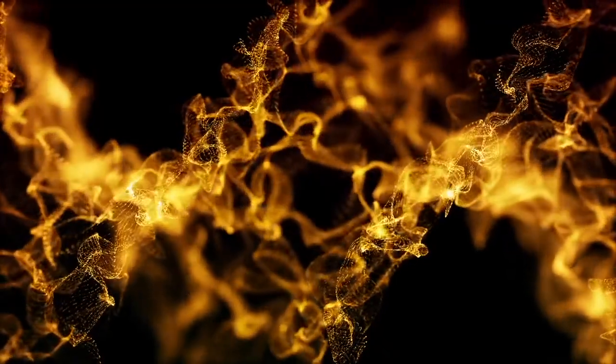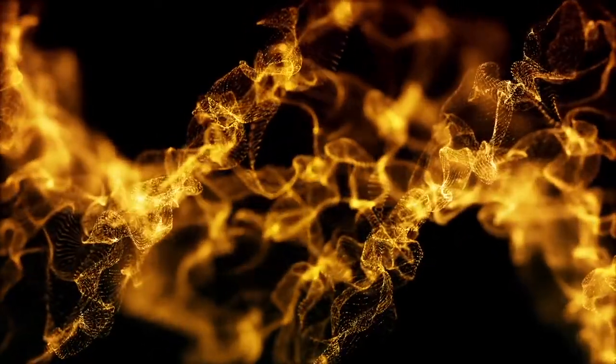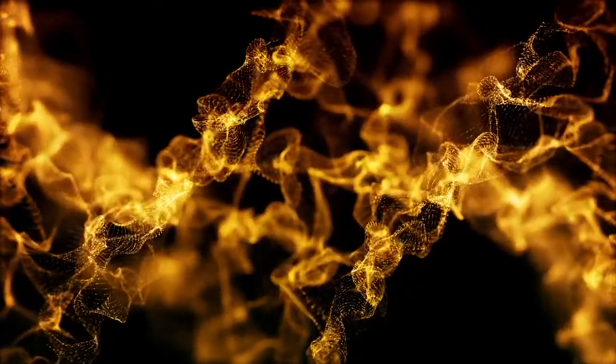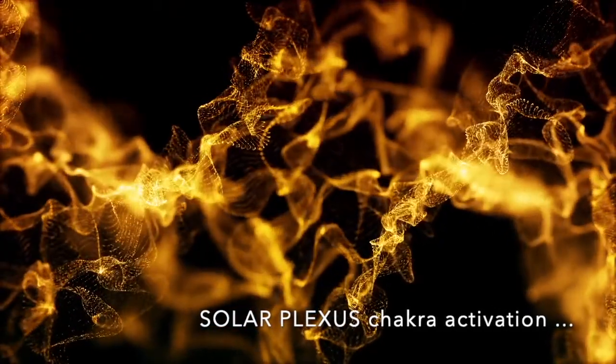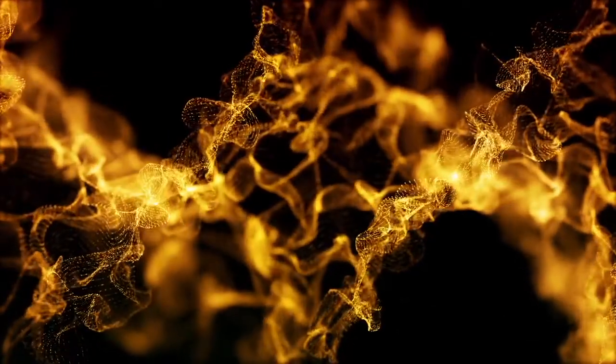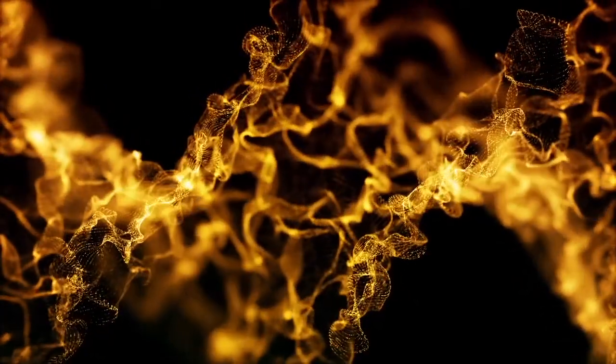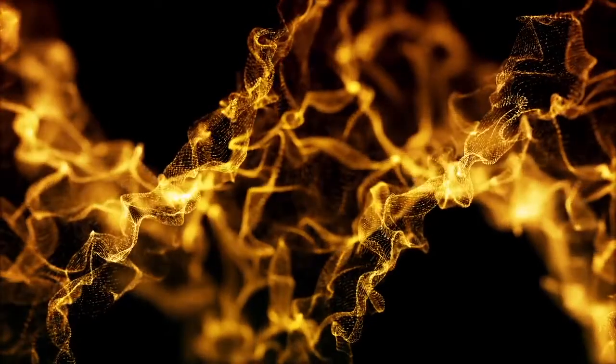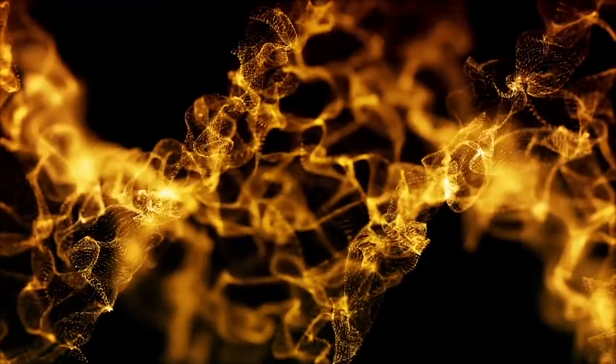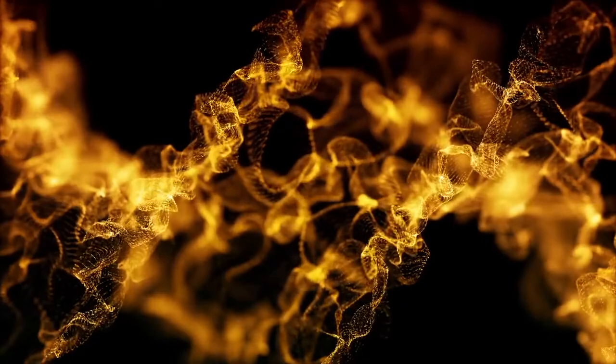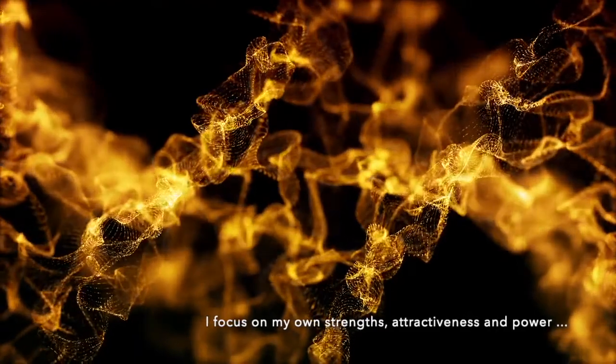Now focus your attention on your stomach area. If you wish, you can place both palms over your stomach. This is where the solar plexus chakra is. Notice how your stomach moves in and out as you breathe. Now see the white light swirling in and around your solar plexus chakra. Then repeat the affirmation: I focus on my own strengths, attractiveness, and power.